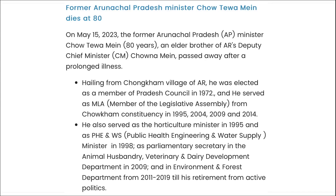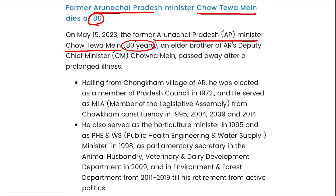Next: Former Arunachal Pradesh Minister Chao Teva, who was 80 years of age, has recently passed away. He was from the Chokham village of Arunachal Pradesh. He was elected as a member of the Pradesh Council in 1972 and served as MLA in 1995, 2004, 2009, and 2014.